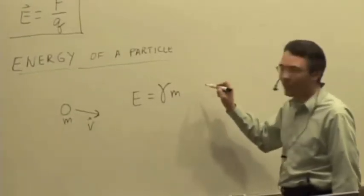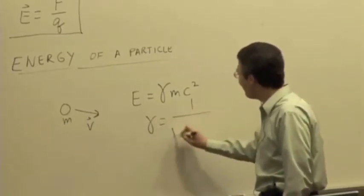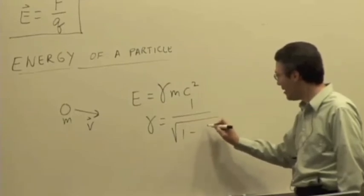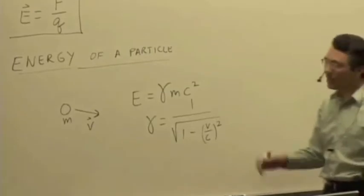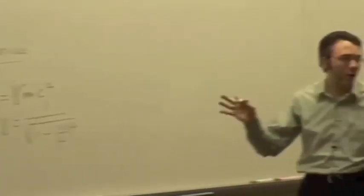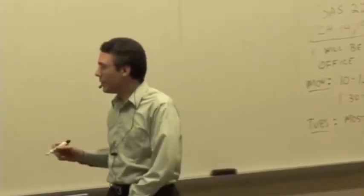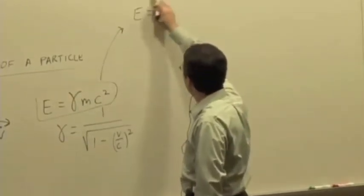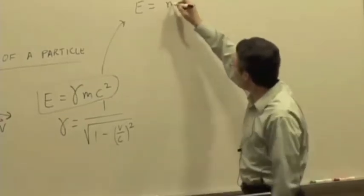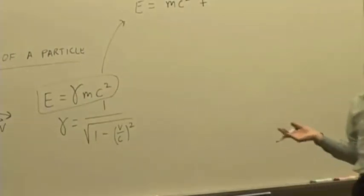What's the most general expression for the energy of a single moving particle? It's gamma m times c squared. What's gamma? One over the square root of one minus v over c squared. So this is the full relativistically correct energy of a particle that comes out of Einstein's theory of relativity. We oftentimes break this expression up into two pieces.